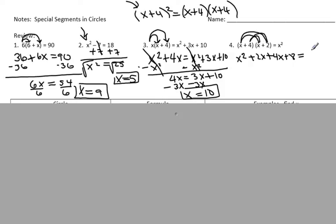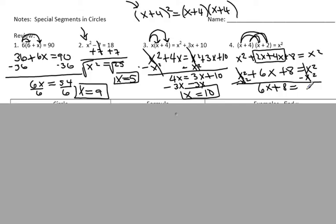That will equal my right side, x squared. Now I'm going to combine my like terms. I have x squared and positive 2x and positive 4x, so that gives me 6x positive plus 8 equals x squared. If we subtract x squared from both sides, we end up with 6x plus 8 equals 0. I'll subtract 8 from both sides, so I get 6x equals negative 8. Divide by 6, x equals negative 8 sixths, which reduces to negative 4 thirds.